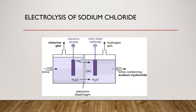Electrolysis is a process in which when current passes through an aqueous solution of an electrolyte, ions are produced which further leads to formation of new compounds. In this process we get chlorine gas at the anode, hydrogen gas at the cathode, and sodium hydroxide in aqueous solution.